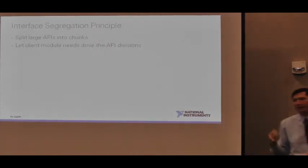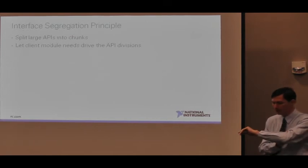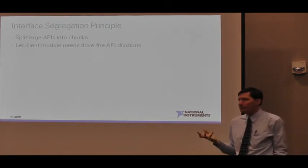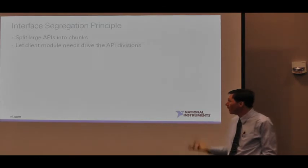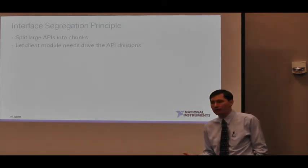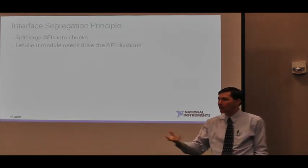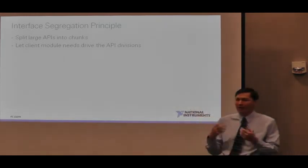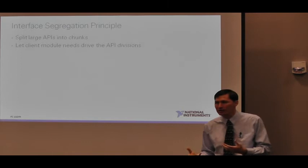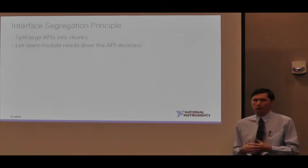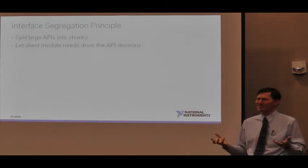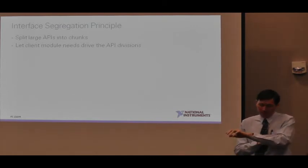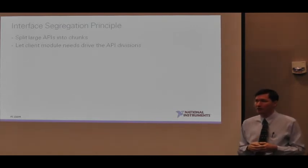Summing up the Interface Segregation Principle: we want to split large APIs into manageable chunks, and we want to let the module's needs drive those API divisions. Make sure you talk to your clients — and sometimes that's yourself in another role. Find out what each section of the code actually needs to do, and only give them those chunks. In a nutshell, that is the Interface Segregation Principle.